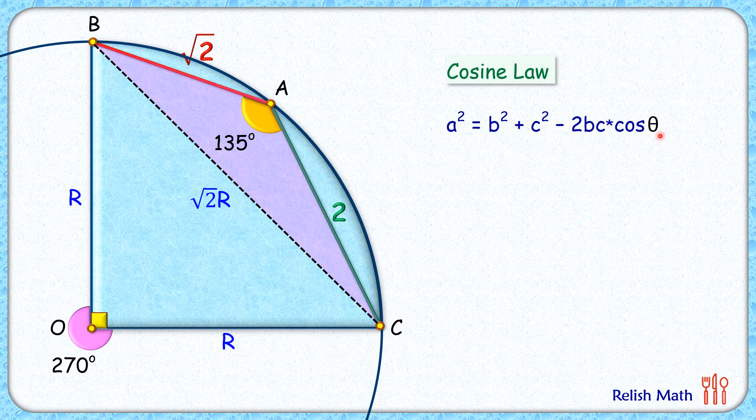And theta is the angle opposite to side a, or theta here is 135 degrees. So putting the values here, a is root 2 R, and b and c those are 2 and root 2, and theta is 135 degrees.